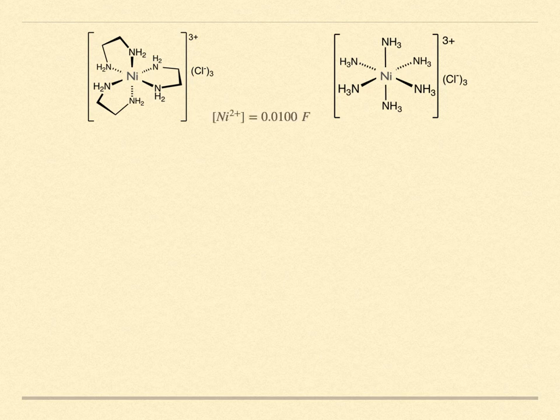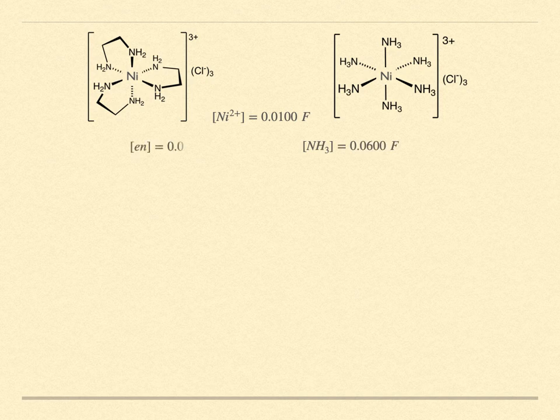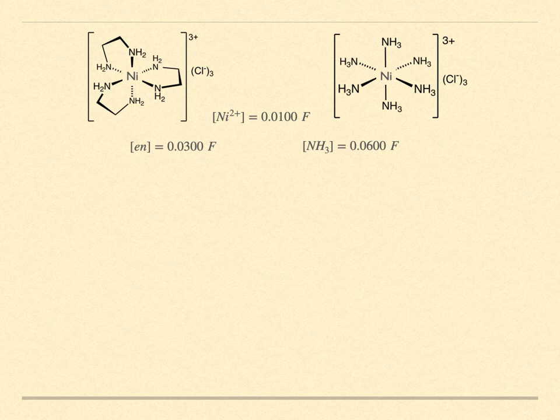But look at this. Make up two solutions that are both formally 0.01 molar in nickel-2+. Make one of them 0.06 formal in ammonia and the other 0.03 formal in ethylenediamine. Let the complex form and reach equilibrium. I've chosen these concentrations for the ligands so that there would be an equal number of nitrogen bonding sites in the two solutions, since there are two such sites for each ethylenediamine, and also that there would be enough ligand to satisfy the stoichiometry of the reaction with the nickel ions. The enthalpy changes should be very similar. Do they reach the same equilibrium conditions?